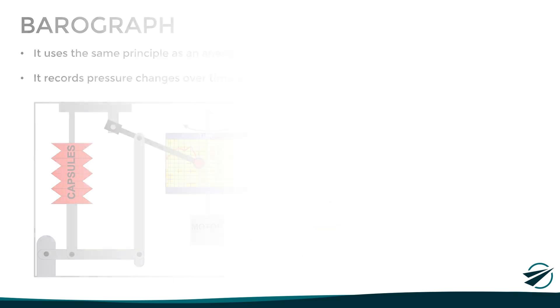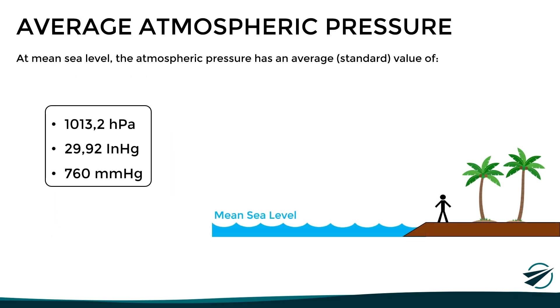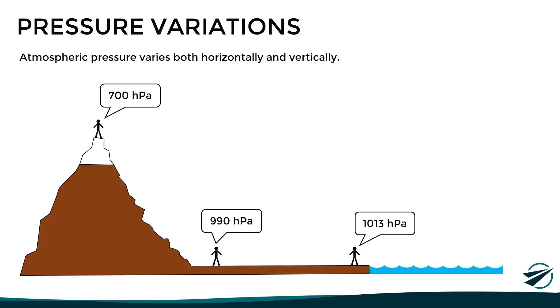Now, in general, we can say that at sea level, atmospheric pressure has an average standard value of 1013 hectopascals, 29.92 inches of mercury, or 760 millimeters of mercury. However, we must keep in mind that the pressure is constantly changing, and therefore these are reference values only. Actually, atmospheric pressure varies both horizontally with distance and vertically with altitude, but we will deal with that in a following video.